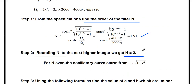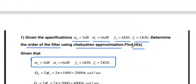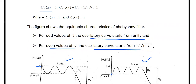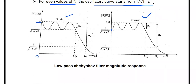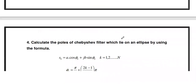Since n = 2, we will have two poles s1 and s2. Note that when n is even, the Chebyshev response starts at 1 / √(1 + ε²) at DC, whereas if n is odd, the oscillation starts at 1. This behavior can be seen in the Chebyshev response graph.